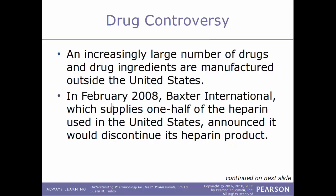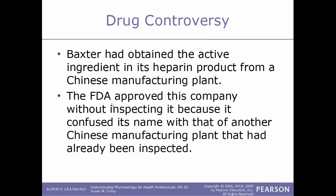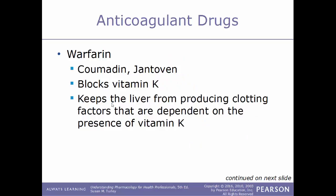Drug controversy: an increasingly large number of drugs and drug ingredients are manufactured outside of the United States. In February 2008, Baxter International, which supplies one half of the heparin used in the United States, announced it would discontinue its heparin product. This was because of 350 serious allergic reactions or deaths associated with Baxter's heparin product in the preceding three months. Baxter had obtained the active ingredient from a Chinese manufacturing plant that the FDA approved without inspecting it, having confused its name with another Chinese plant that had already been inspected.